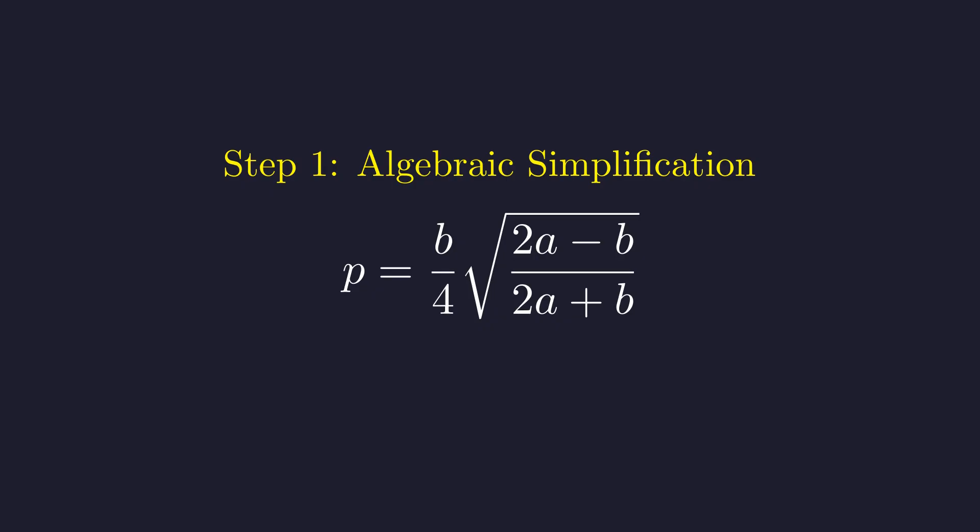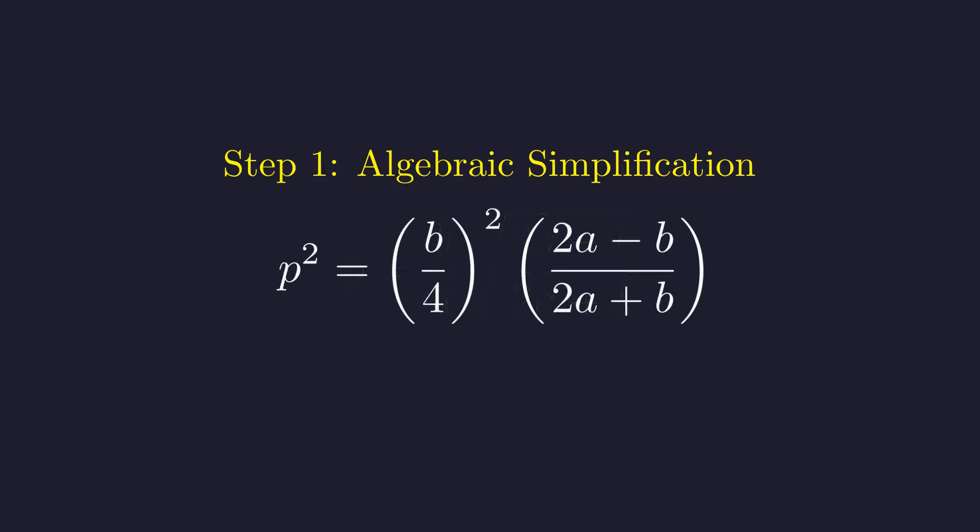The classic move when you see a square root: square both sides. It's simple, but it'll open up the structure we need to see. And just like that, the square root disappears.